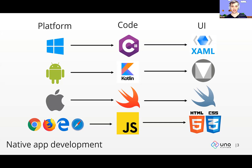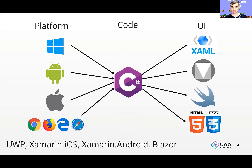So can we do better than that? The next step would be to share the business logic of your application. As .NET developers, using C# as an example, we share the business logic and then target each platform with its own native UI language. For Windows, XAML; for Android, XML; and for the web, we can use Blazor, which allows us to write C# business logic and use HTML and CSS for UI.